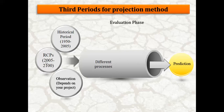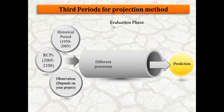For RCPs, they start from 2005 up to 2100. If you want to use just a few decades, download the specific period according to your project objectives — for example, up to 2060 or 2050. Also be careful to collect your observation data so you can make an evaluation phase for your prediction process.